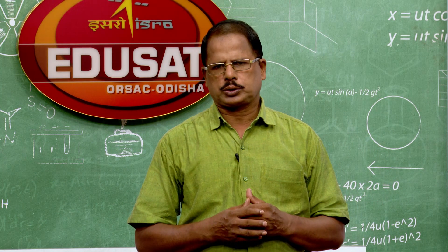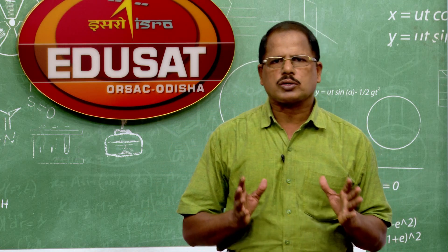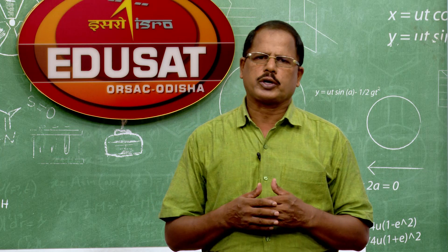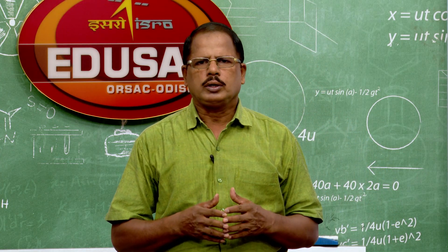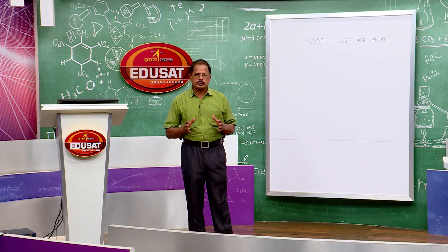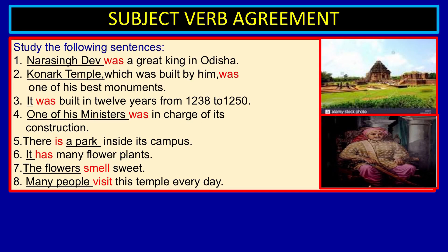Dear children, this is all about one of our greatest kings of Odisha. The chapter we are going to discuss today is very, very important — not just for your examination, but throughout your life whenever you use English. There are eight sentences in this passage and I have underlined some phrases. These underlined phrases are the subjects of the sentences, and the red-colored words are the verbs used with those subjects.